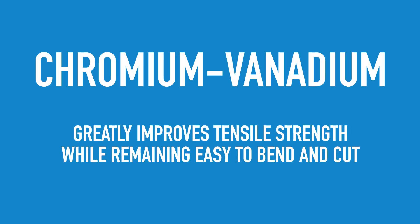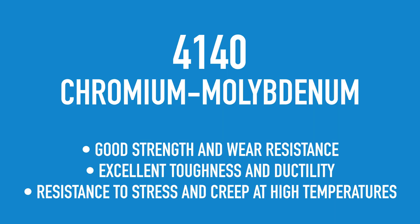Chromium vanadium is used to greatly improve tensile strength while remaining easy to bend and cut. The most commonly used grades of alloy steel are 4140, which is a chromium molybdenum steel with good strength and wear resistance, excellent toughness and ductility, with the ability to resist stress and creep at prolonged high temperatures.